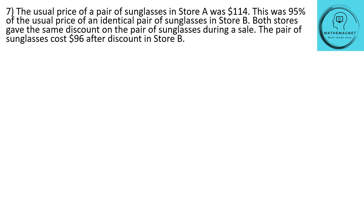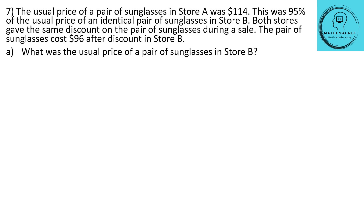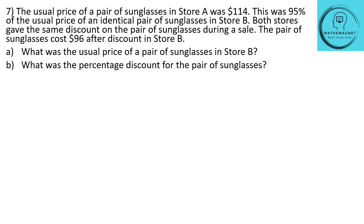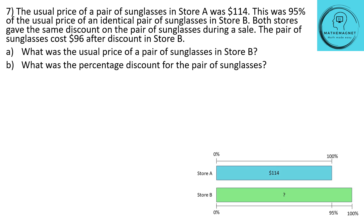Question number 7. The usual price of a pair of sunglasses in store A was $114. This was 95% of the usual price of an identical pair of sunglasses in store B. Both stores gave the same discount during a sale. The pair of sunglasses cost $96 after discount in store B. What was the usual price of a pair of sunglasses in store B, and what was the percentage discount?